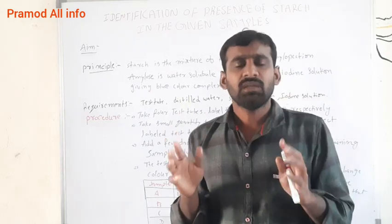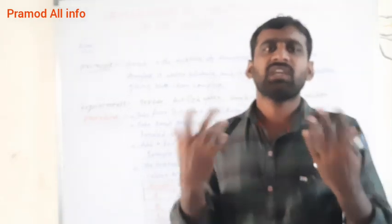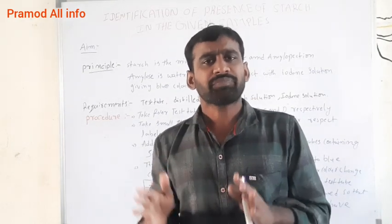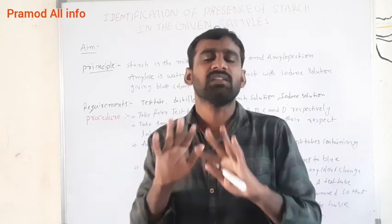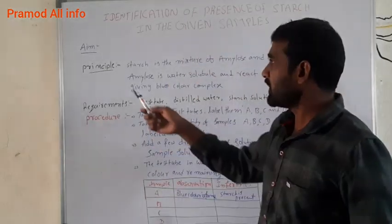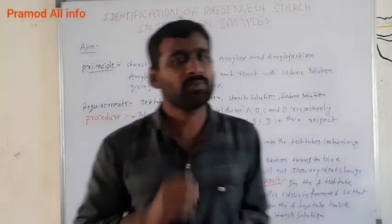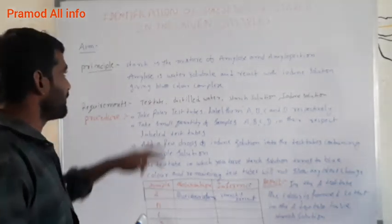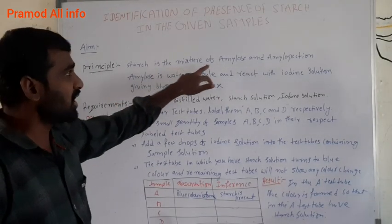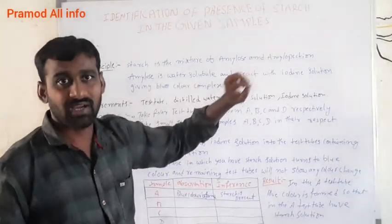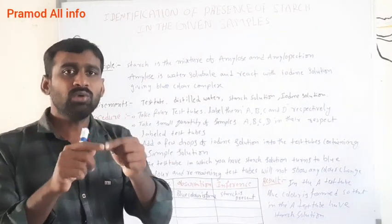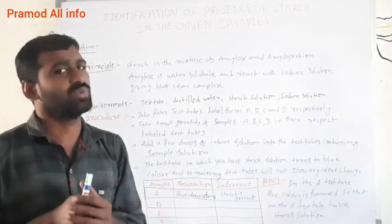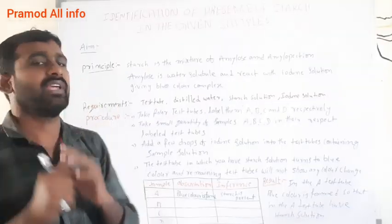Identification of the starch in the given samples by iodine solution. Now the principle — the principle related to starch: starch is a mixture of amylose and amylopectin. These two together form starch.